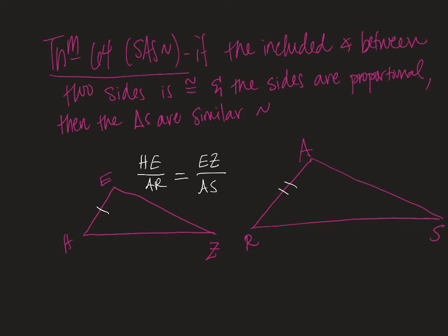Okay, so nothing's congruent, it's just that their ratios are equivalent. So maybe like this one and this one. Then I also need the included angle, just like side-angle-side congruency. So that would mean I would also need angle E and angle A.